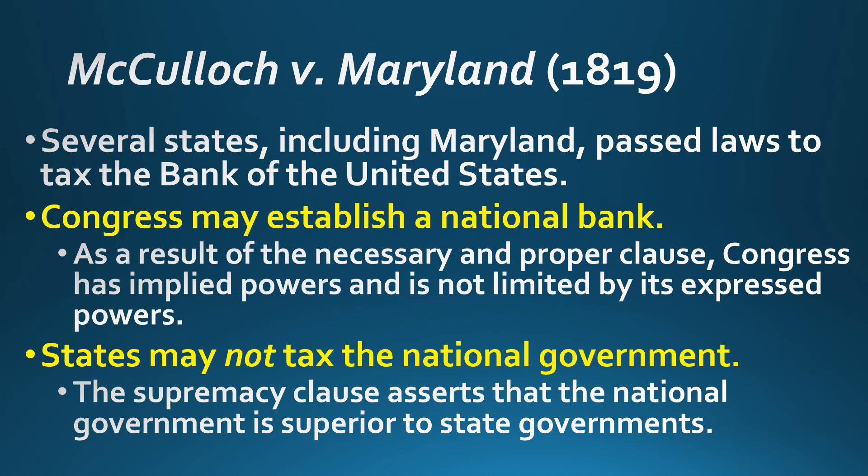Let's start with McCulloch versus Maryland. This is a federalism case — states versus the national government. The federal government created a national bank, and some states, including Maryland, passed laws that would tax that bank. The first question is: can Congress establish a national bank? The answer is yes, because of the necessary and proper clause, which gives Congress implied powers and expands congressional power.